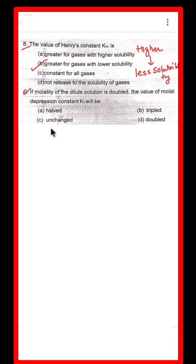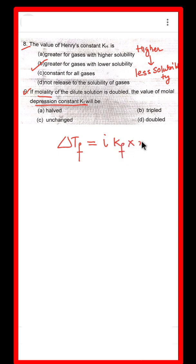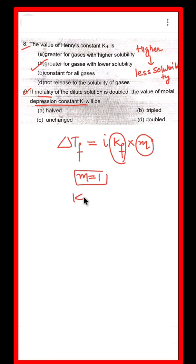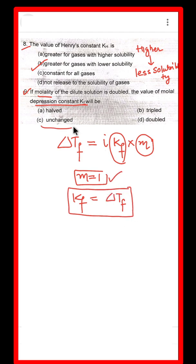Question 9: If the molality of a dilute solution is doubled, the depression in freezing point for a one molar solution — since ΔTf is directly proportional to molality, doubling molality doubles ΔTf. The answer is that ΔTf will be unchanged relative to the proportional relationship — the change will be doubled.